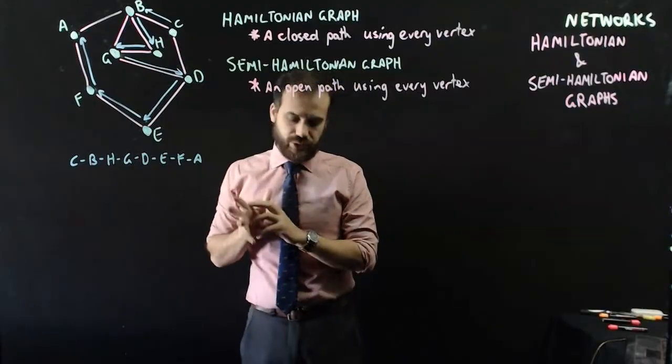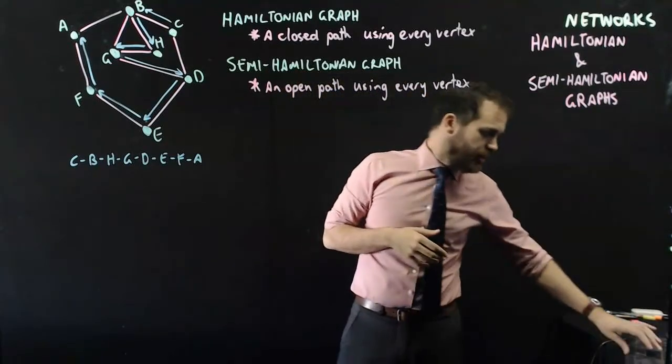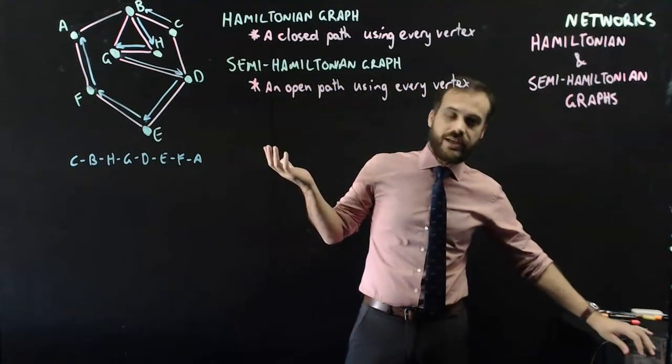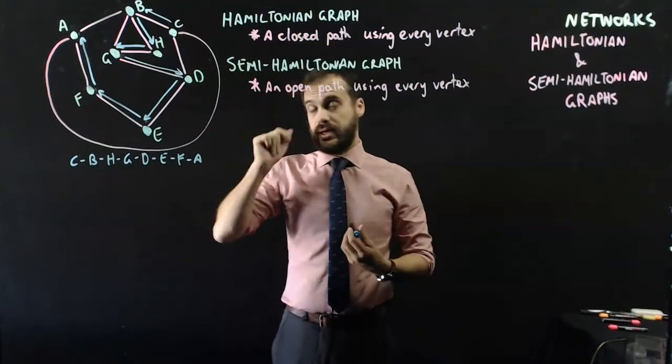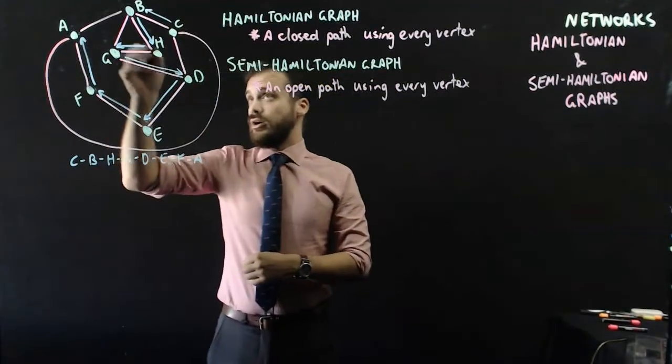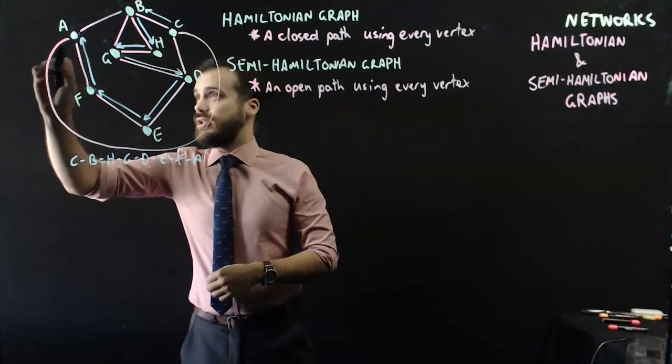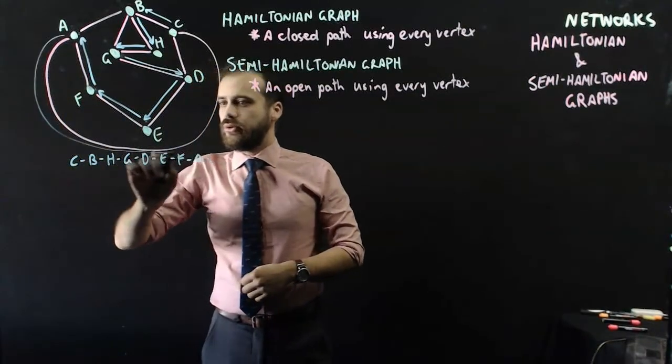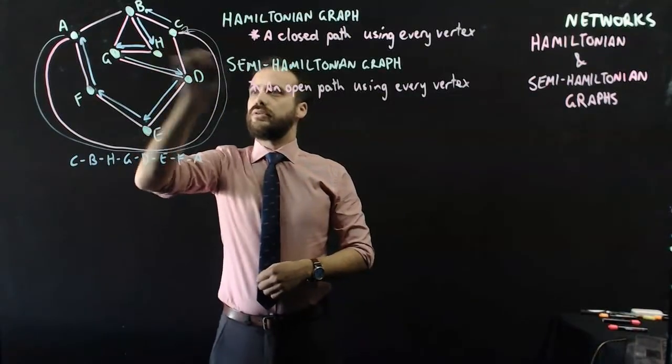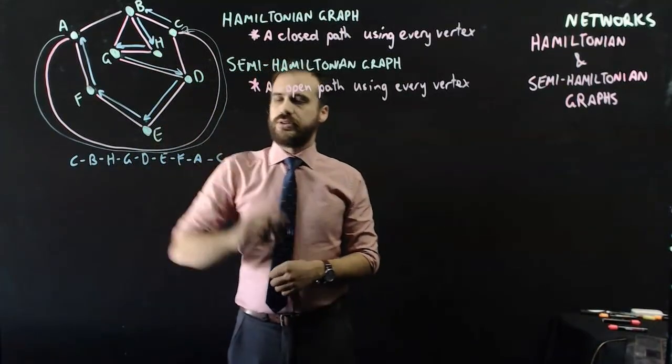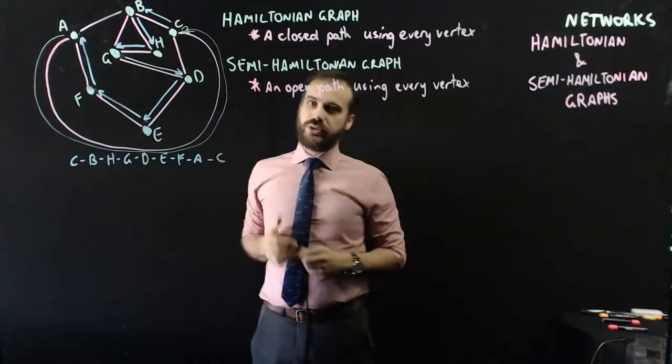Now, I'm going to make it a Hamiltonian graph. I'm going to cheat. Let's add an edge. Now, this is a Hamiltonian graph. We went from C to B to H to G to D to E to F to A and then all the way back to C. That is a Hamiltonian graph.